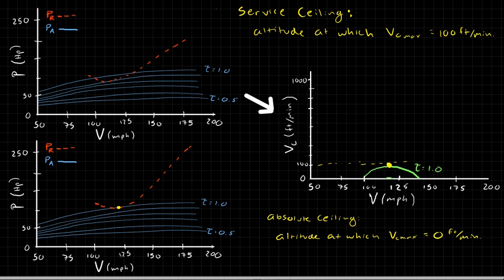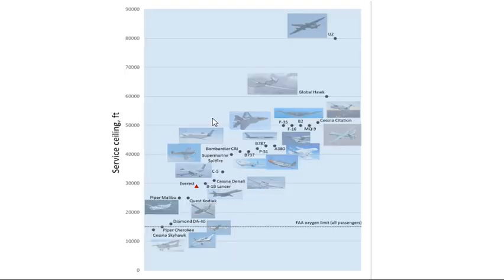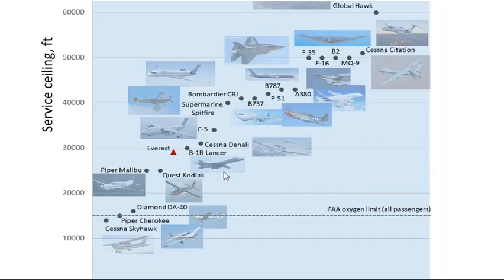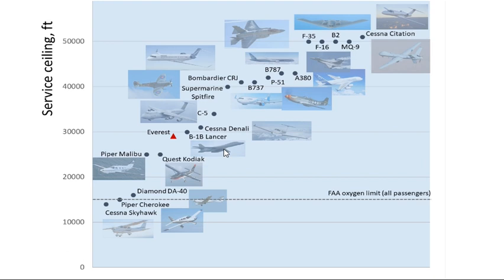To give an idea of how service ceiling compares across aircraft, here's a plot showing service ceilings for a wide range of types. Zooming in at low altitude, most general aviation aircraft fall around 15,000 feet, although a few like the Cessna Denali are a bit higher. Note that the FAA oxygen limit is at 15,000 feet — the altitude at which oxygen is required for all passengers. If your aircraft's service ceiling is above this limit, you must carry oxygen for all passengers.